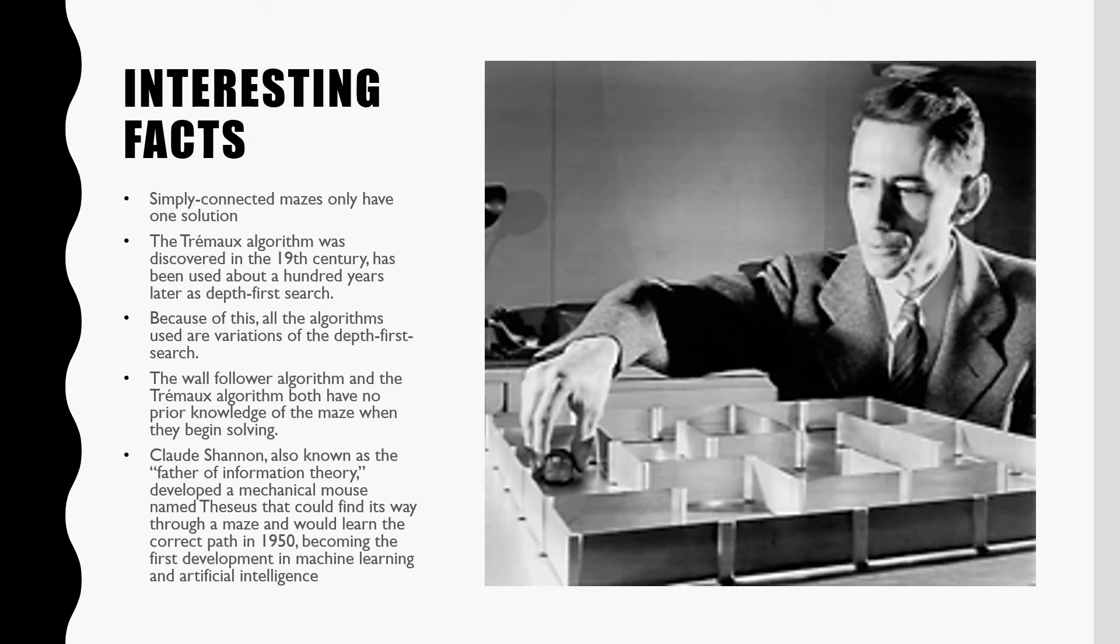Theseus was able to find his way through a maze and would learn the maze. When placed back into an area he had been before, he would be able to correctly find his way to the end with no mistakes. This was the first development in machine learning and artificial intelligence.